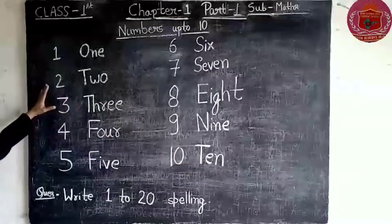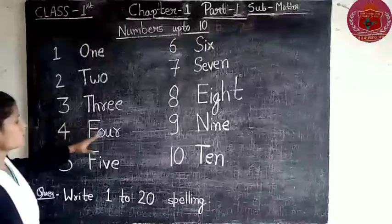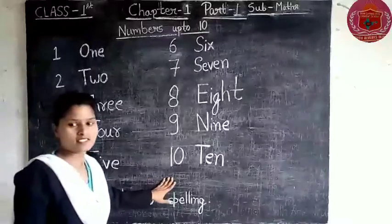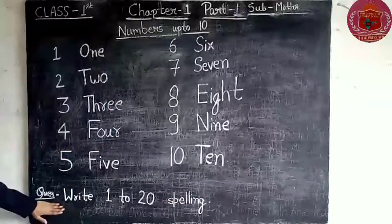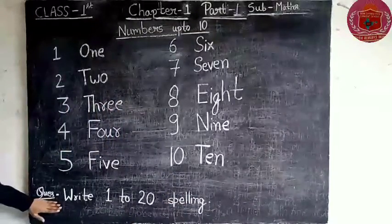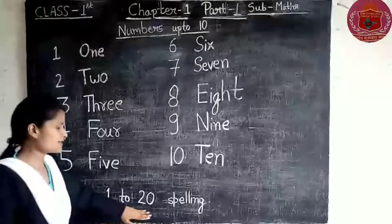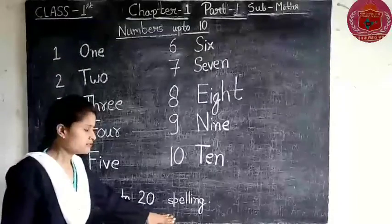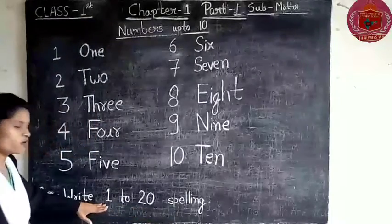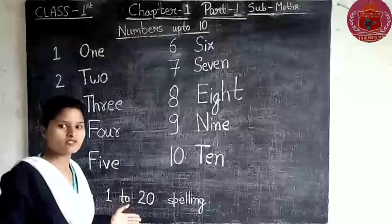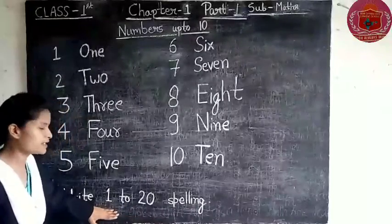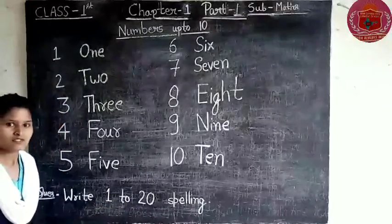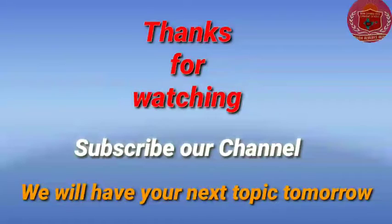So friends, today we learned about numbers 1 to 10 in spelling form. Now for your homework, the question is: write the spellings of 1 to 20, that means O-N-E, T-W-O, and so on up to 20, written in your notebook. Thank you.